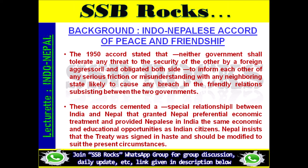The 1950 Accords stated that neither government shall tolerate any threat to the security of the other by a foreign aggressor, and obligated both sides to inform each other of any serious friction or misunderstanding with any neighboring state. These accords cemented a special relationship between India and Nepal, granting Nepal preferential economic treatment and providing Nepalese in India the same economic and educational opportunities as Indian citizens. Nepal insists that the treaty was signed in haste and should be modified to suit present circumstances.